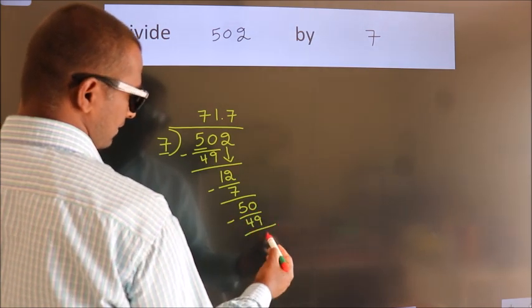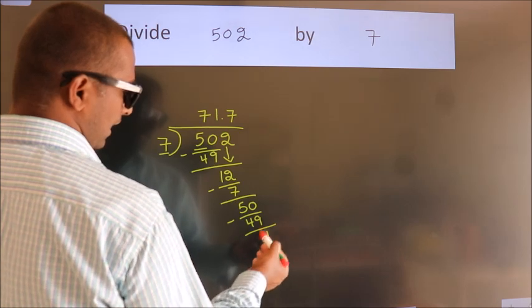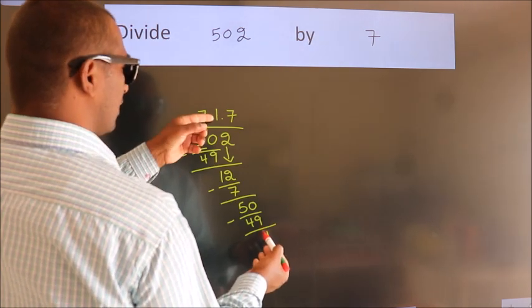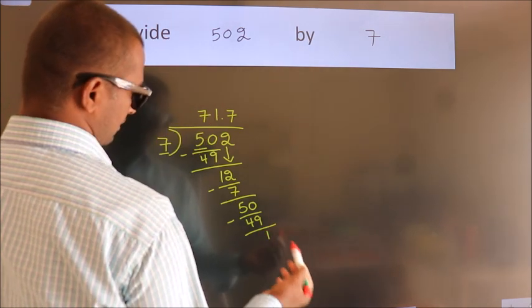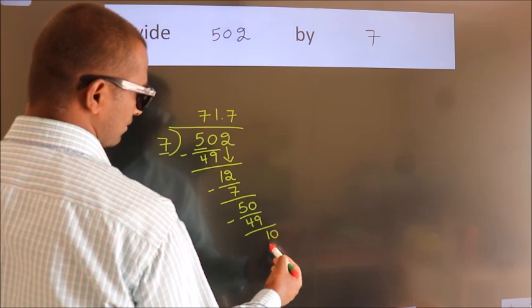Now we subtract. We get 1. After this, we already have the decimal, so directly take 0. So, 10.